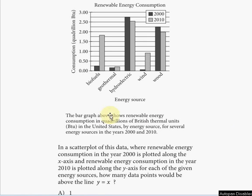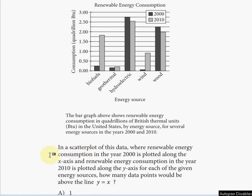We're given a bar graph. It says the bar graph above shows renewable energy consumption in quadrillions of British thermal units (BTU) in the United States by energy source for several energy sources in the years 2000 and 2010. In a scatter plot of this data, renewable energy consumption in the year 2000 is plotted along the x-axis, and renewable energy consumption in the year 2010 is plotted along the y-axis for each of the given energy sources.